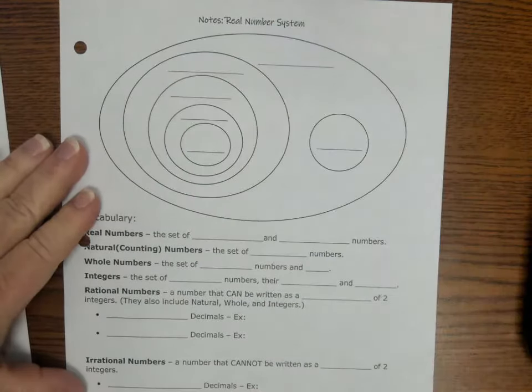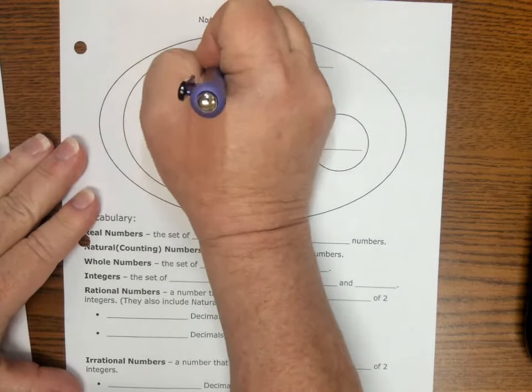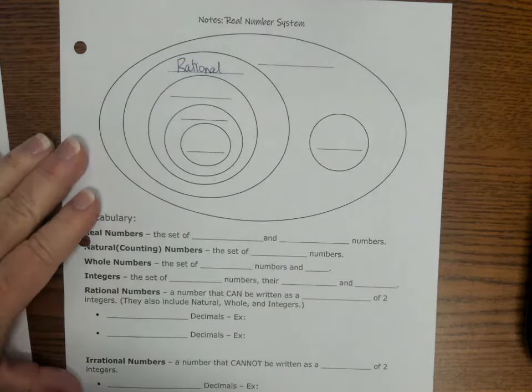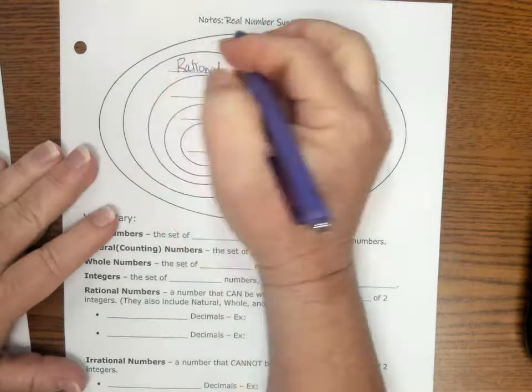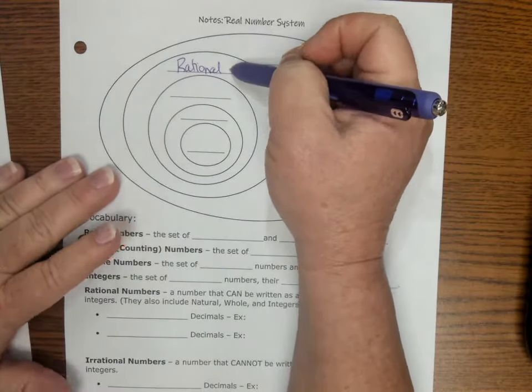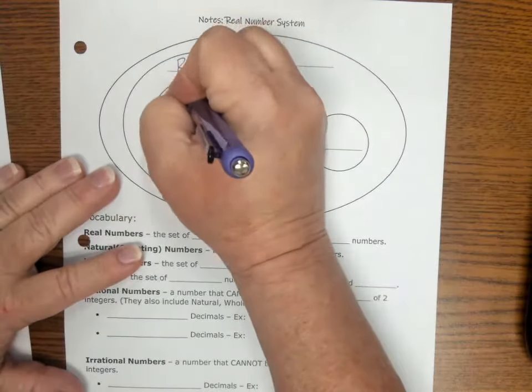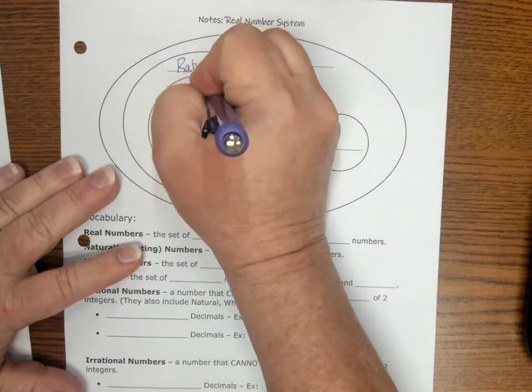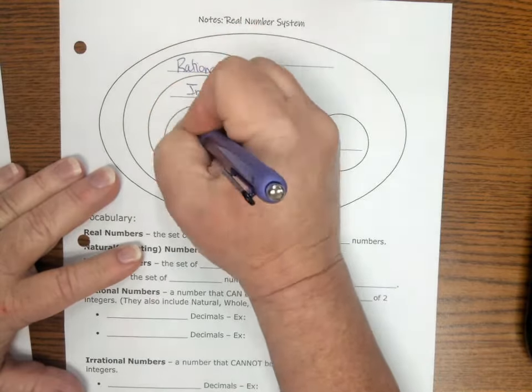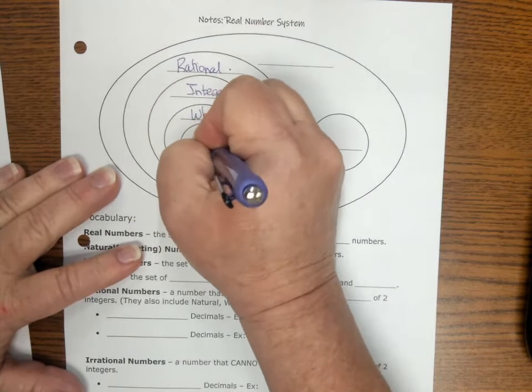You have always known about rational numbers. You've been told rational numbers came in sixth grade, I believe, maybe before that. So this is rational, integers, whole, natural. And I should have done this differently.